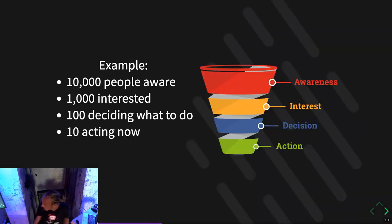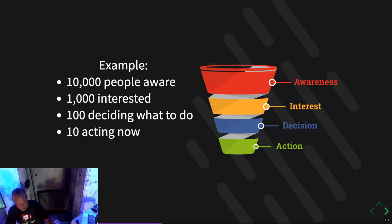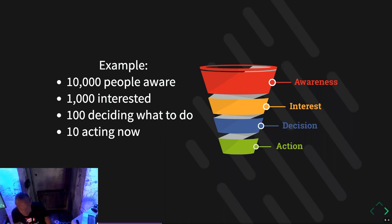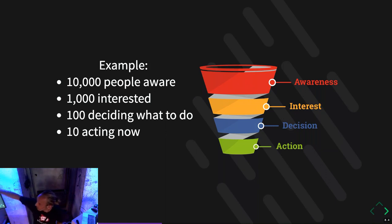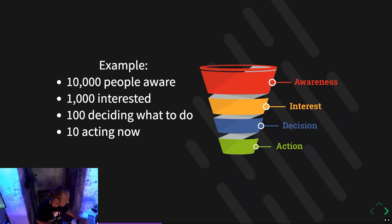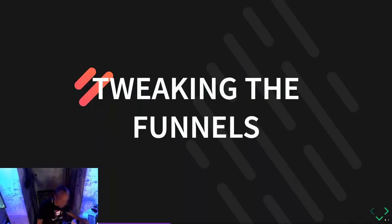Every time you go to the next phase in the funnel, about 10% is left. So let's say 10,000 people are aware, 10% of those — 1,000 — get really interested. 100 decide to do something and only 10 can make a decision and register. Meanwhile, in the other layers, people think about it and may come back later and act. So the question is: how can we engage our visitors on Drupal.org, Drupal.nl, or other community platforms to become happy contributors?